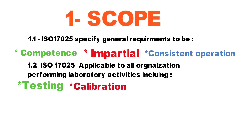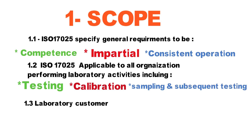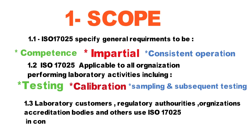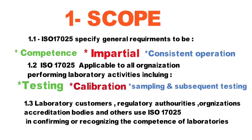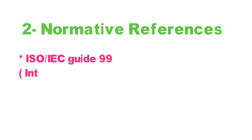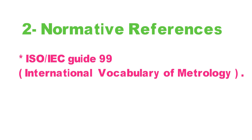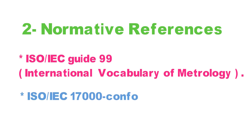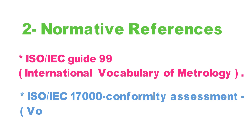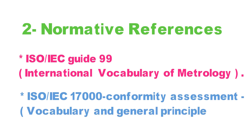Clause 1.3 covers laboratory customers, regulatory authorities, accreditation bodies, and other organizations using ISO 17025 in confirming or recognizing the competence of laboratories. Regarding normative references, we refer to reference documents — specifically ISO Guide 99, which is the international vocabulary of metrology, and ISO 17000, which covers conformity assessment vocabulary and general principles.